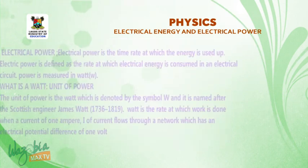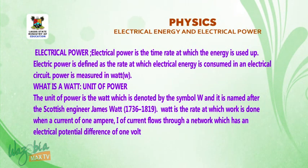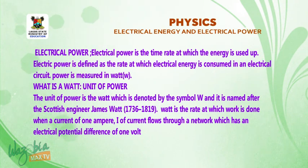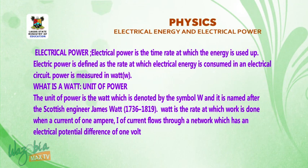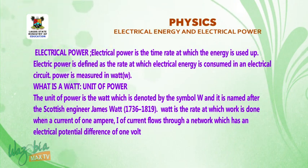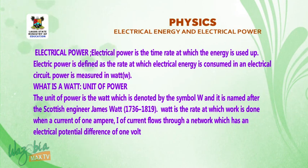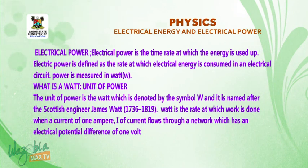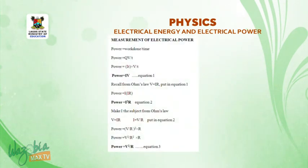Now, electrical power is defined as the time rate at which energy is used up, or the rate at which energy is consumed in an electric circuit. Power is measured in watts. The unit of power is the watt, denoted by the symbol W, named after the Scottish engineer James Watt. One watt is the rate at which work is done when a current of one ampere flows through a network with an electrical potential difference of one volt.